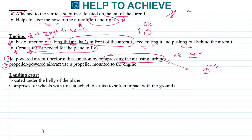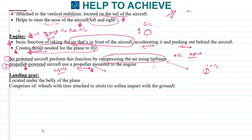In contrast, propeller-powered engines use a propeller instead of turbines. The propeller mechanism is a large topic we can discuss later, but the basic function of any engine is to provide thrust — and the mechanism used to generate that thrust differs depending on the engine type.